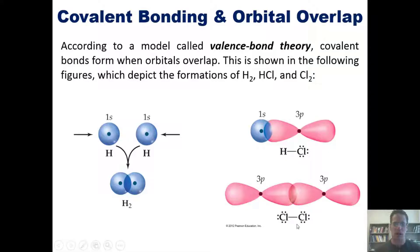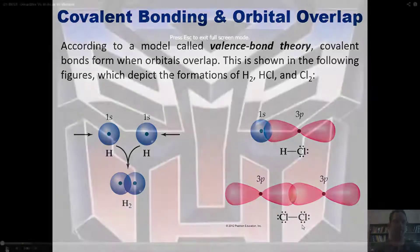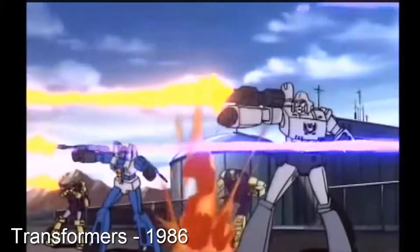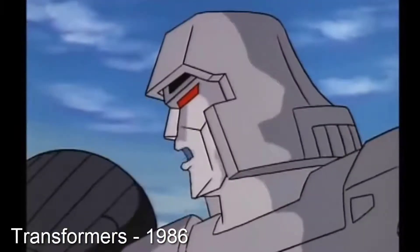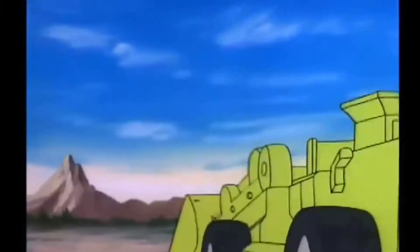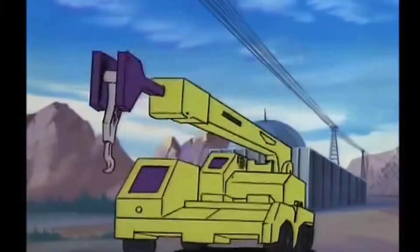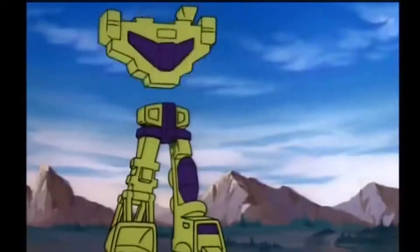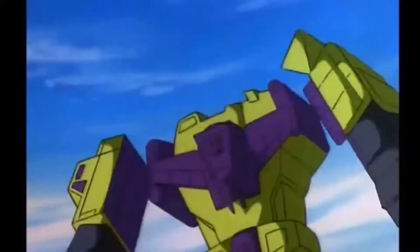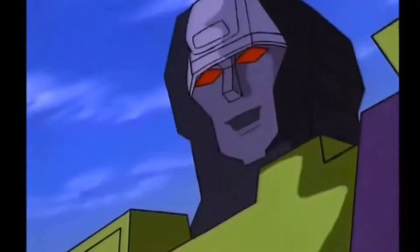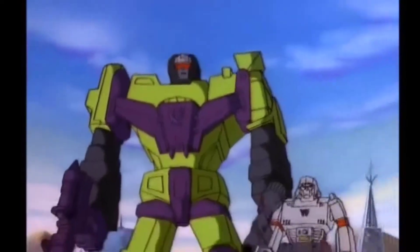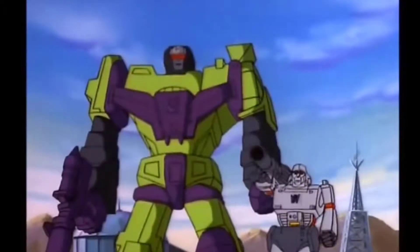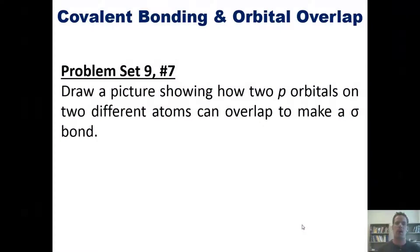Remember, we merge two atomic orbitals and we get a mighty molecular orbital. That brings us to a problem: I want you to draw a picture showing how two p orbitals on two different atoms can overlap to make a sigma bond.